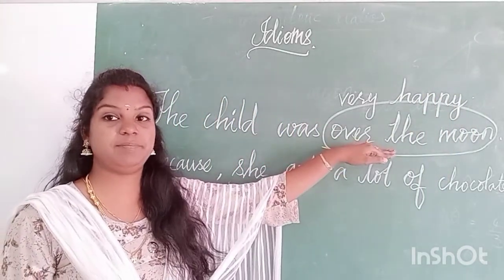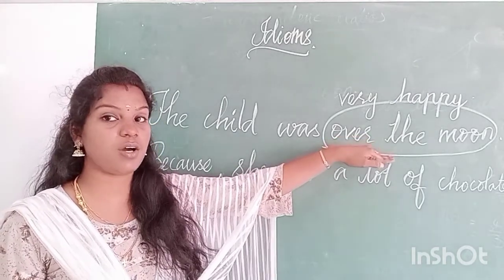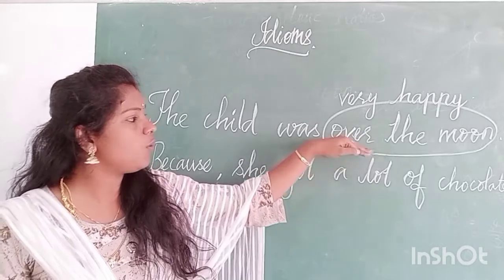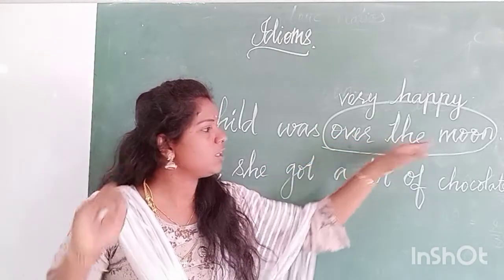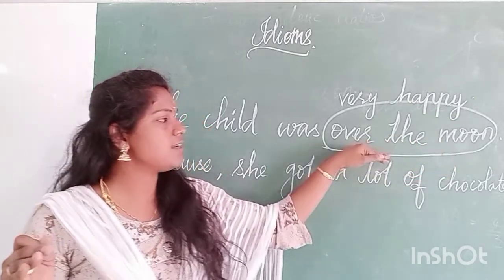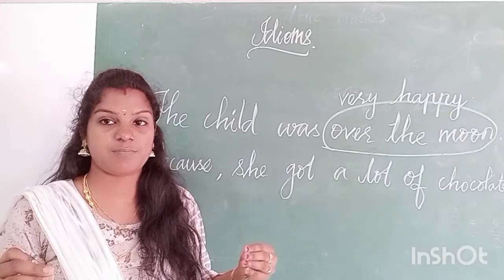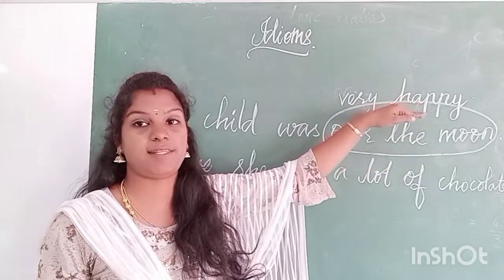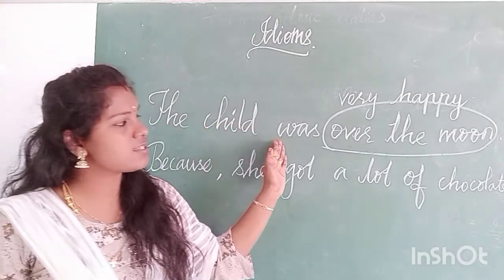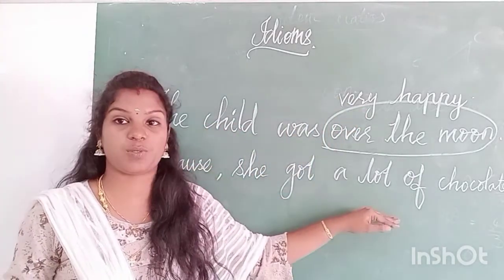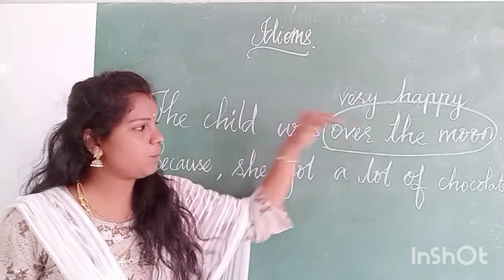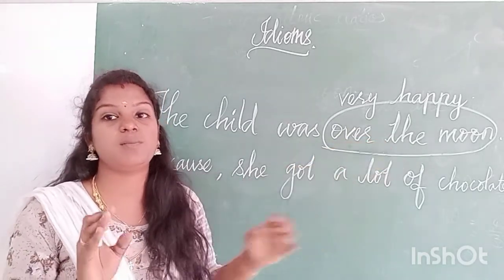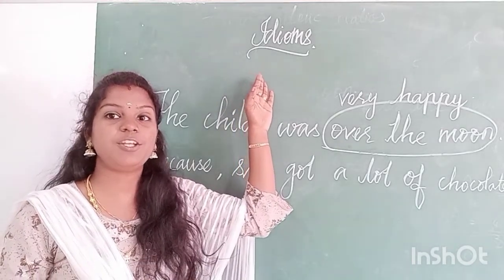This is called an idiom. The meaning of the words in a sentence is completely different from the individual word meanings. Over means 'up' and moon you know — but the meaning is completely different. So this is called an idiom. Over the moon means very happy. The child was very happy because she got a lot of chocolates. Did you get it?